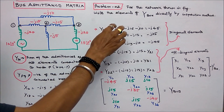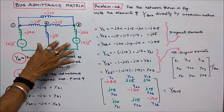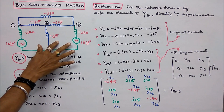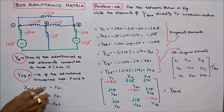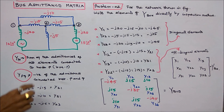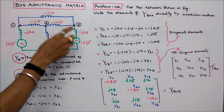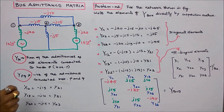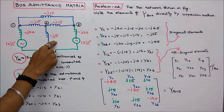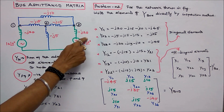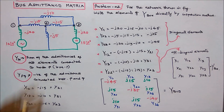Problem 2: for the network shown in the figure, write the elements of Y-bus directly by inspection method. There are three nodes: 1, 2, and 3. The line admittances are minus J20, minus J5, minus J20, minus J15, minus J15, and minus J10.